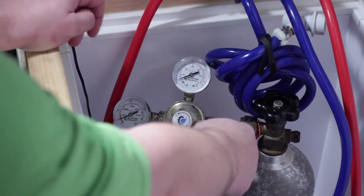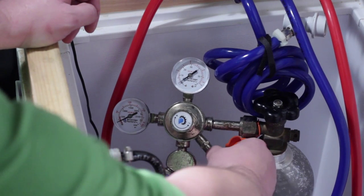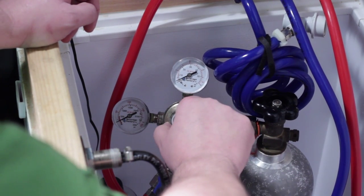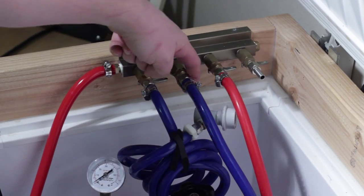Turn down the regulator on the CO2 tank and vent the gas to drop the pressure. Turn up the regulator to about 3 psi. Now turn the gas back on for your keg.